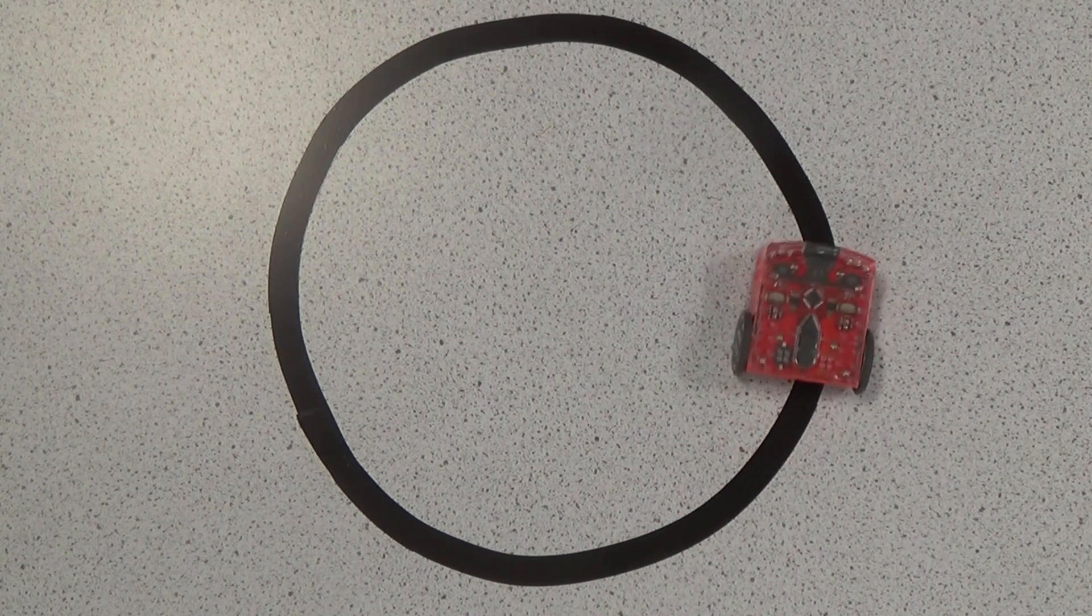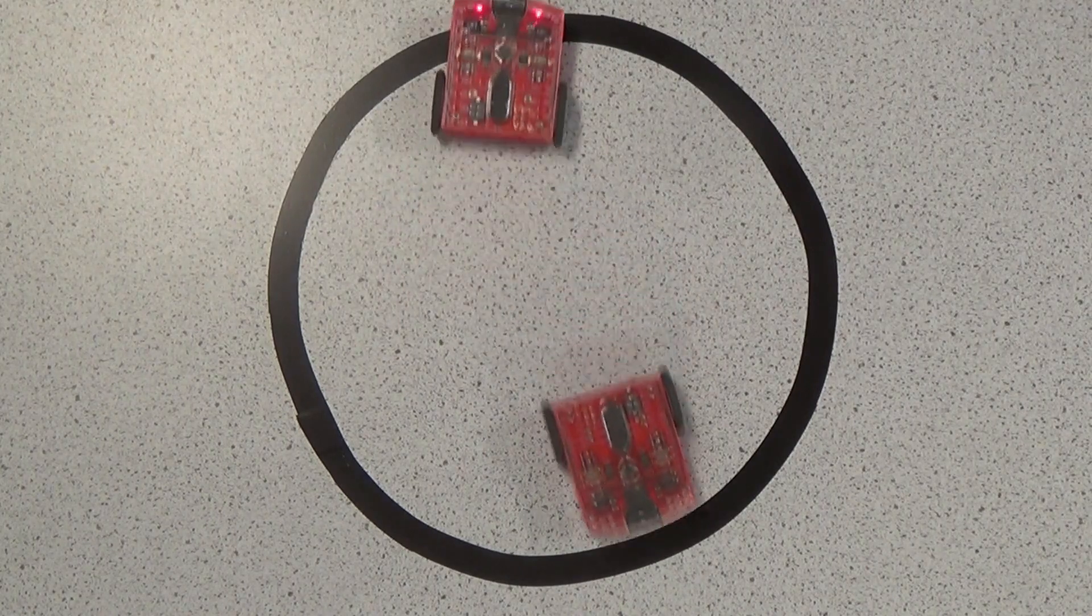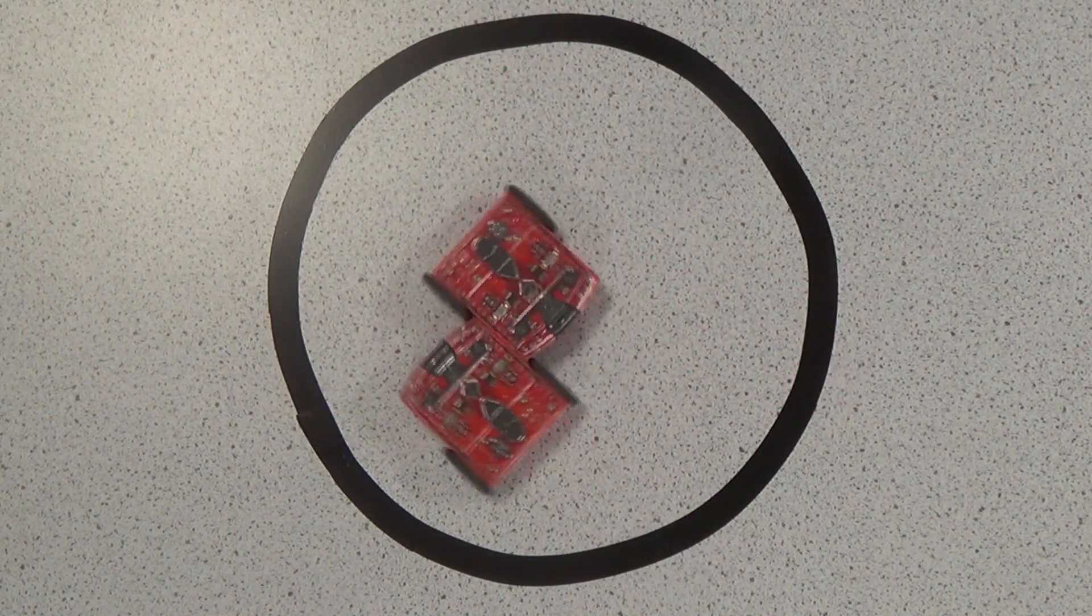Now, there are two final programs to show you. If you have two Edison robots, then you can have them sumo wrestle by having them run the same program. Let's watch the action for a while.